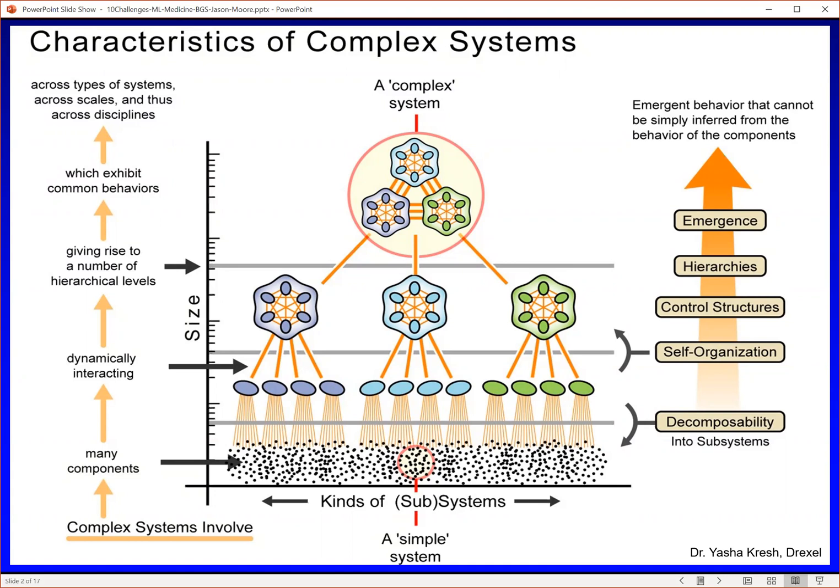Think of these as biochemical pathways, for example. Biochemical pathways interact with each other in a hierarchical manner to produce a complex system, and it's this complex system that ultimately determines our health. If we want to understand health, we need to not only be able to measure the components, but we have to understand all their complex interactions through this complex hierarchical structure.